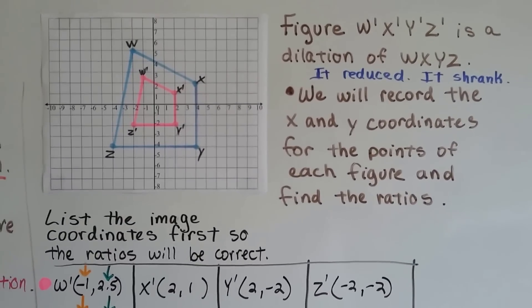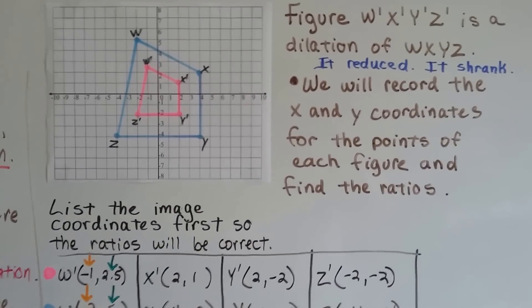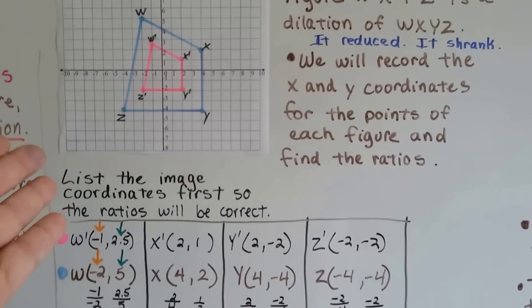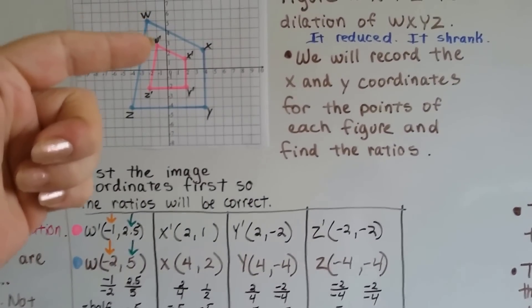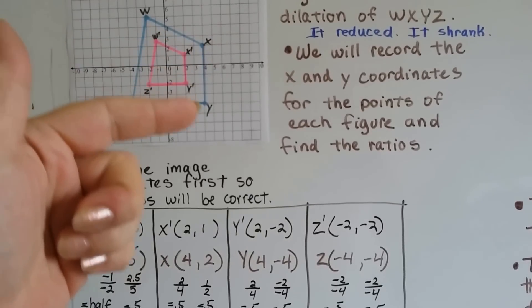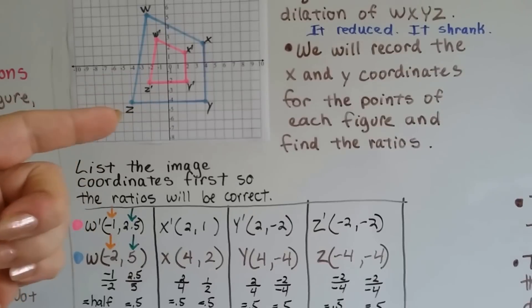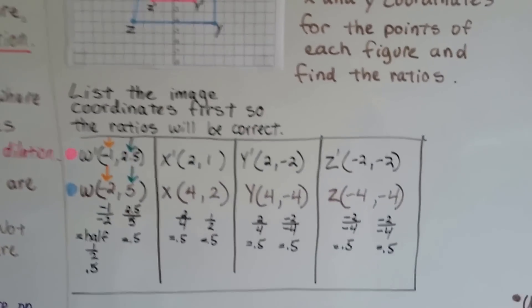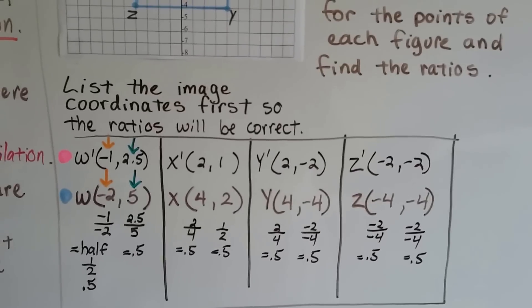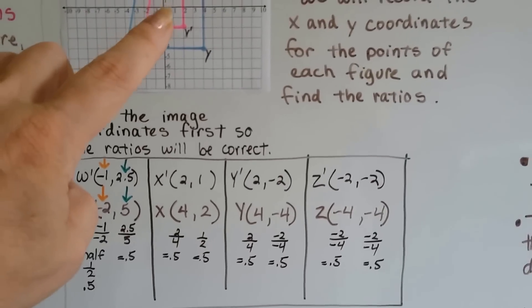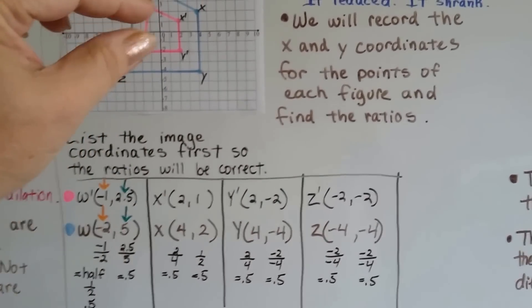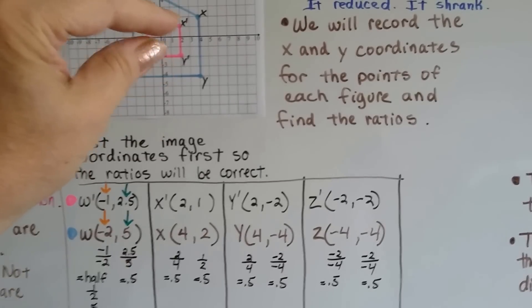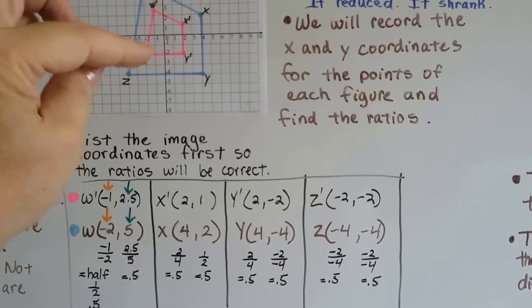We record the x and y coordinates for the points of each figure and find the ratios. We can find the ratios between them. So we're going to compare w to w prime and x to x prime and y to y prime and z to z prime and we're going to see what the ratio is. So the first thing we do is list the image coordinates, the pink ones, so that the ratios will be correct. You always do the image first, the one with the primes, on the labels.